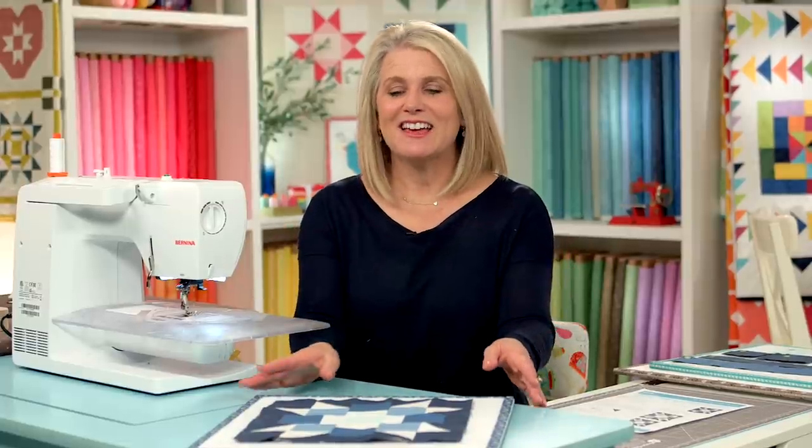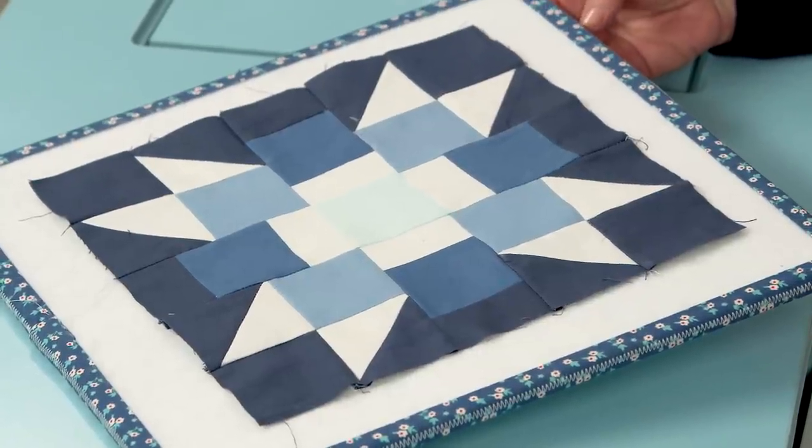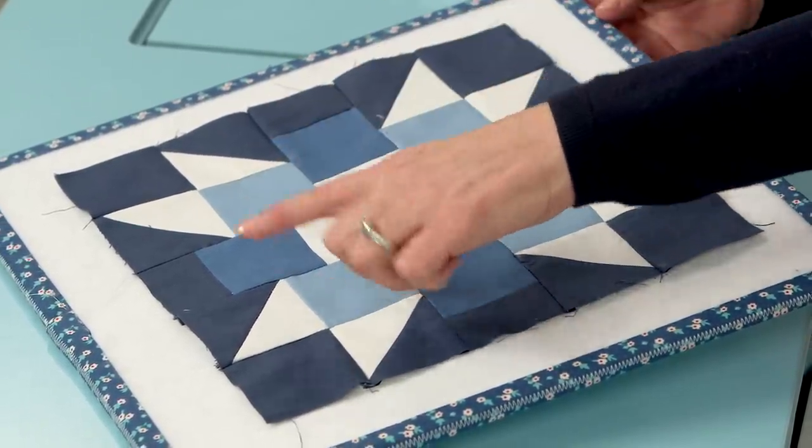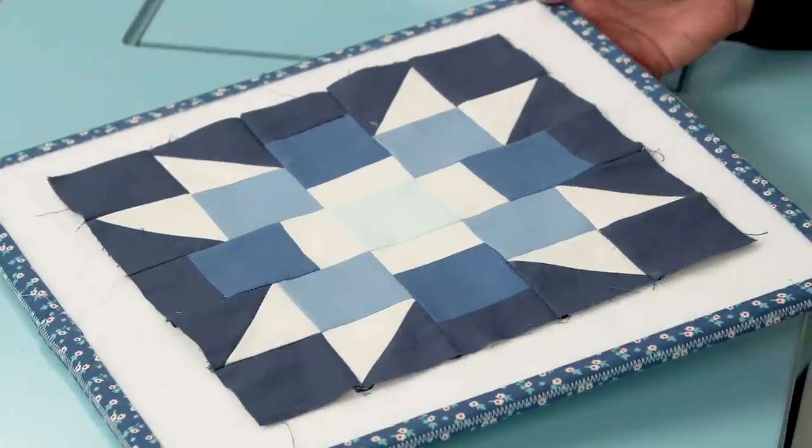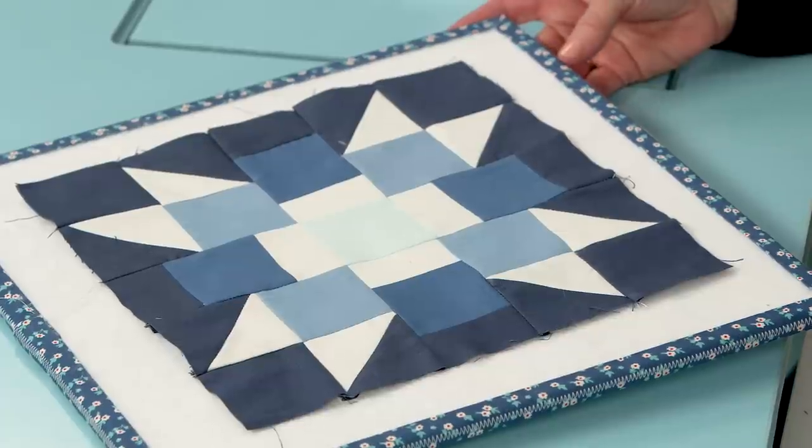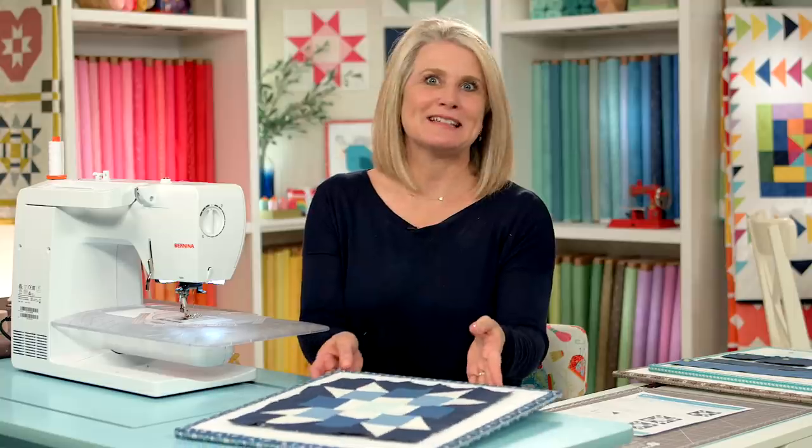Welcome back to RBD Block Challenge. Today we're working on block number nine. This block was designed by Amanda Niederhauser and it's called Lynx. Now if you know Amanda, she's a huge cat person and you're gonna have to use a little bit of your imagination to find the cats in here. There's actually four of them. See the cat with the Lynx ears? So that's kind of fun. The block looks complicated but it's easier than you think to make. Let's get started.